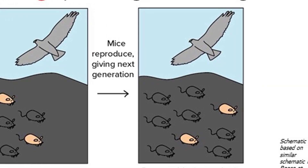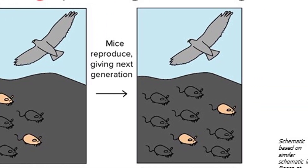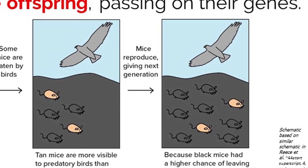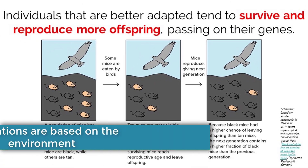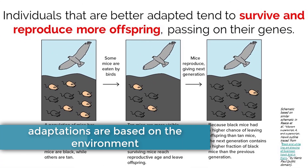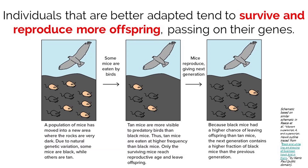As you can see, the allele frequencies of the light versus dark fur color gene differ after generations have passed, meaning that the population is evolving over generational time. It is important to note that adaptations are based solely on the environment, and if the environment changes, a beneficial adaptation could turn into a harmful trait. If this population of mice were to relocate to an environment with a lighter background, the lighter mouse would then possess the beneficial adaptation, where the darker mouse would not be selected for.